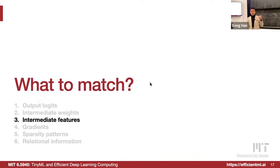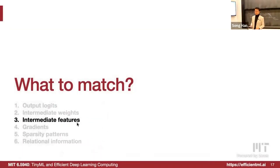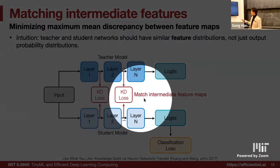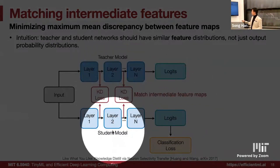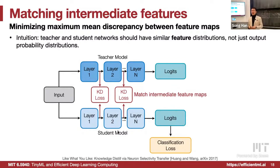There are also many other methods like low-rank matching, which we will skip here. We can also match the intermediate features — not only the weights, but also the activations. Previously we were matching the weights; now we are matching the activations, the intermediate feature maps between teacher and student. The intuition is that the teacher and student network should have similar feature distribution not just at the very end output, but also across all layers.